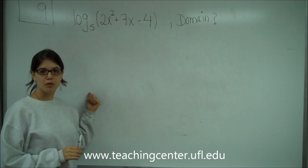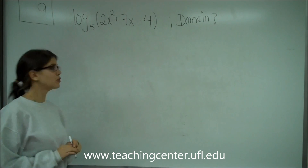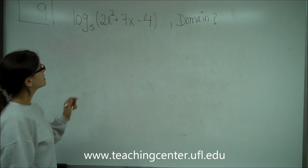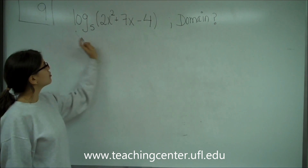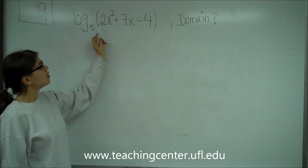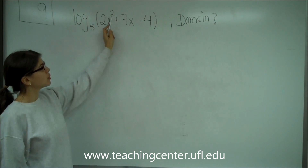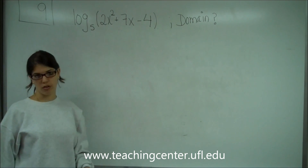This is question number 9 on the multiple choice, and it says: find the domain of log base 5 of 2x squared plus 7x minus 4.